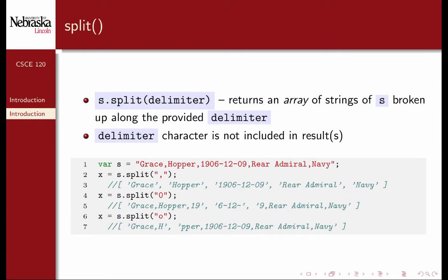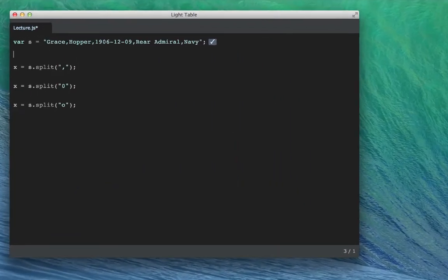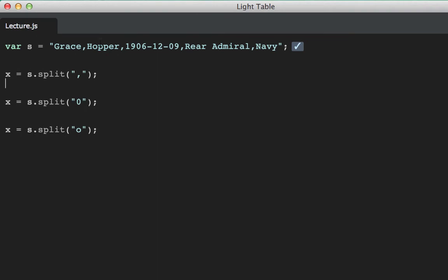Sometimes you might have formatted data, for example, in comma separated value file formats. The split function allows you to basically cut up or tokenize a string along some sort of a delimiter. It returns an array of strings that have been split up along that delimiter. The delimiter character is not included in the results. Let's take a look at this example. Here we have a string with comma delimited values. Grace, Hopper, her birthday, her rank, and her branch of the military.